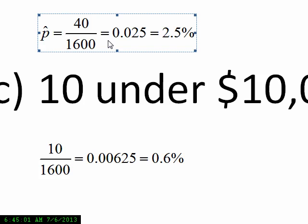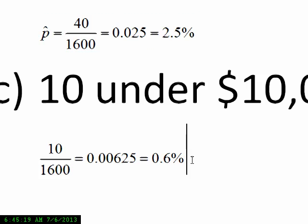Just like we found with the sampling distribution of means, where we took the average of all the x-bars and that was equal to the population mean, it turns out the average of all the p-hats is equal to the population proportion p. So let me write that down for you.